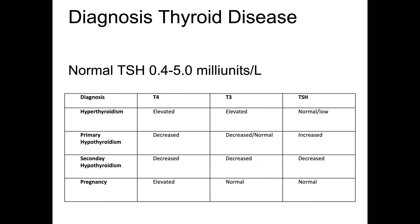How do we diagnose thyroid disease? One of the most specific tests is your TSH, with a normal value of 0.4 to 5 million units per liter. When we start talking about hyperthyroidism, you're going to have an elevated T3, elevated T4, and TSH may be normal. With hypothyroidism, everything's going to be decreased. Generally, just remember that with hyperthyroidism your values are elevated, and with hypothyroidism your values are decreased.